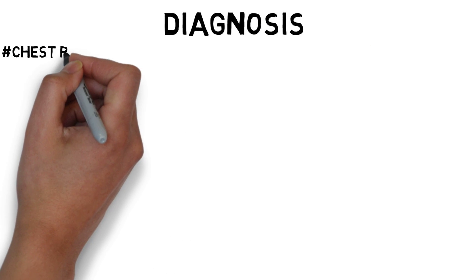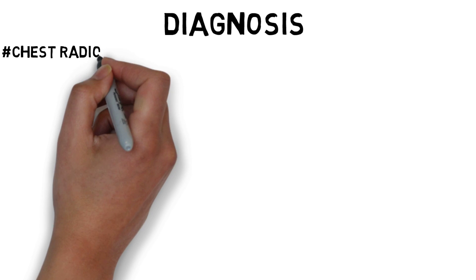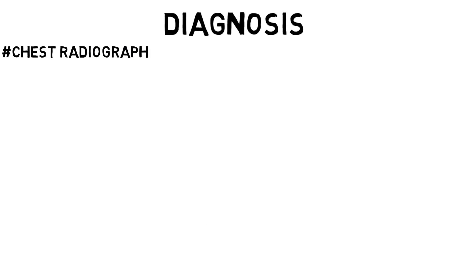Diagnosis begins with a chest X-ray. Routine chest radiographs are abnormal in approximately 90% of patients with bronchiectasis. Findings include hyperinflation, tram tracks, increased linear markings, focal pneumonitis, ring shadows and atelectasis.